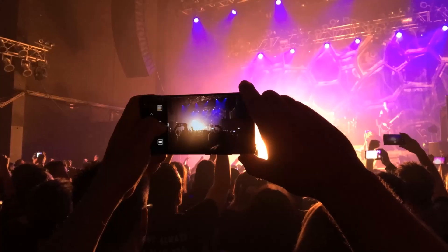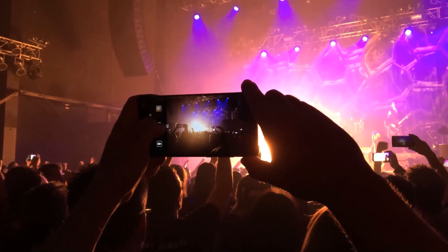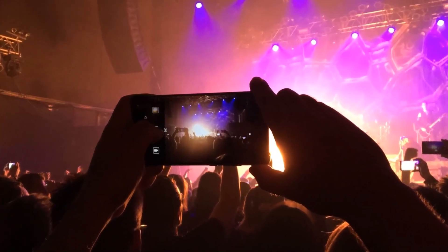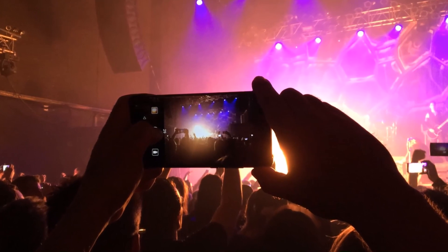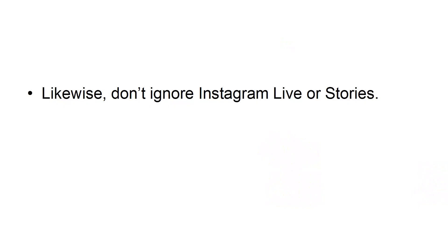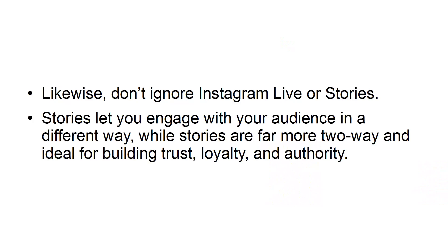Tip 4: Use Video, Live, and Stories. Instagram isn't just about posting photos. Video actually has greater engagement than photography on the platform, and it can also help you convey a more complex message more efficiently. Likewise, don't ignore Instagram Live or Stories. Stories let you engage with your audience in a different way, while Live is far more two-way and ideal for building trust, loyalty, and authority.